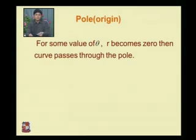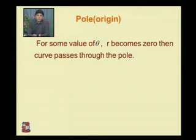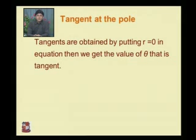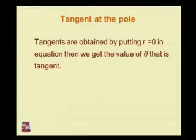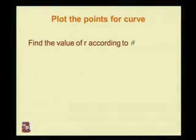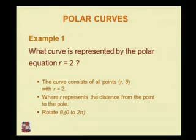For some values of theta, if r becomes 0, then the curve passes through the pole. For example, in r = a·cosθ, if we take theta = pi/2, then r becomes 0, meaning the curve passes through the pole. To find the tangent at the pole, put r = 0 in the equation to get the tangent. Finally, plot points by finding values of r for corresponding values of theta.